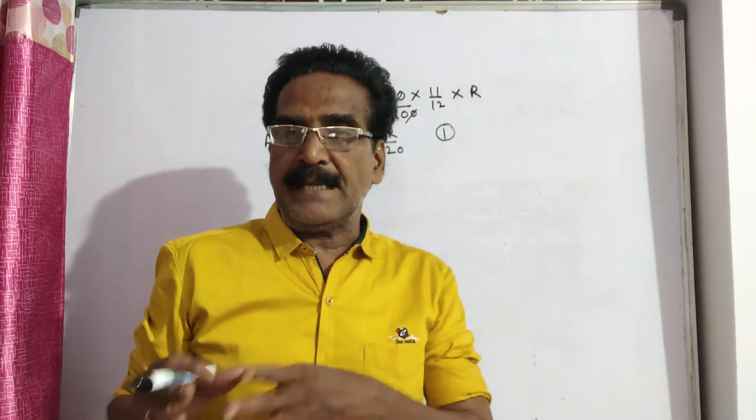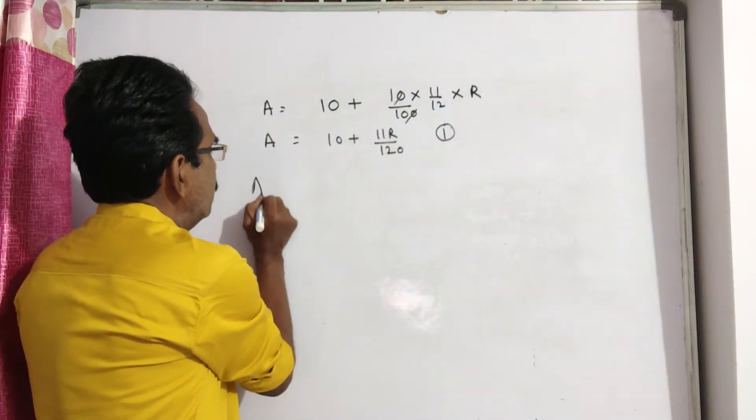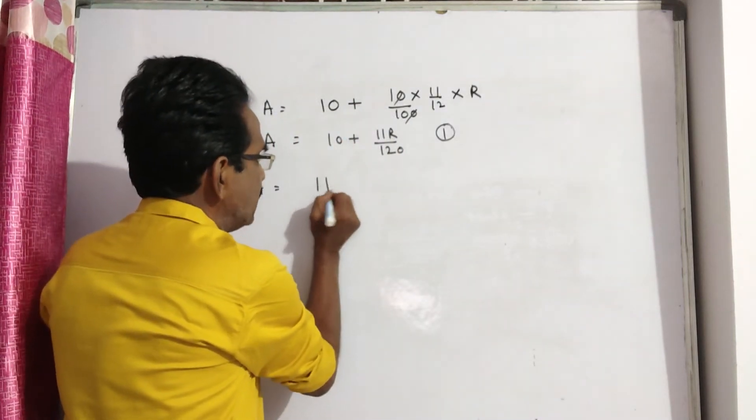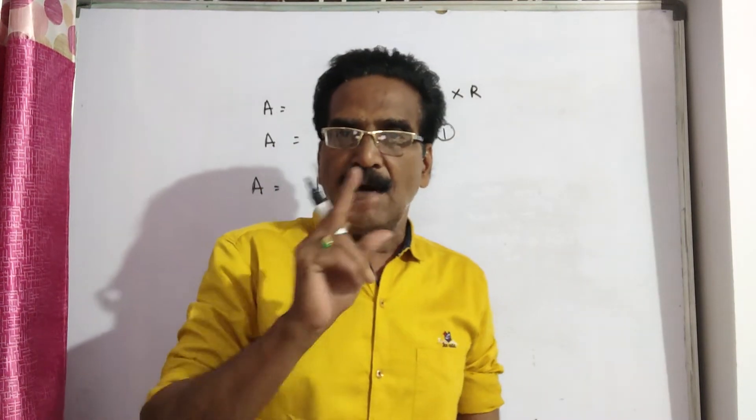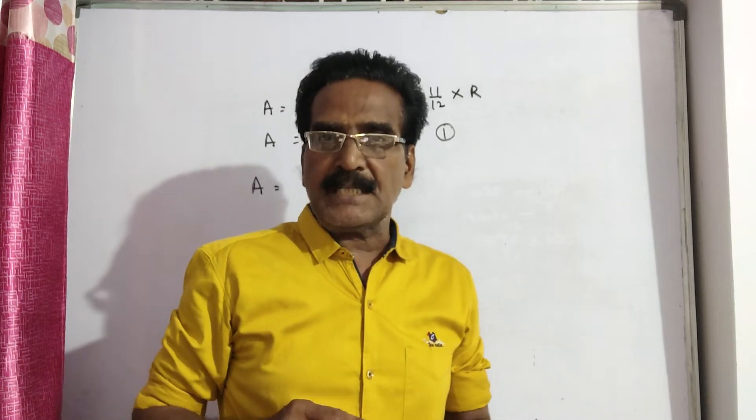11 installments at 1 rupee each means the principal amount is 11 rupees. Now coming to the interest portion.